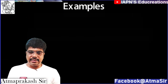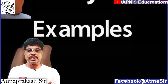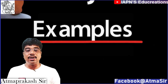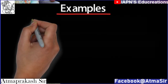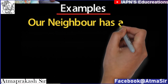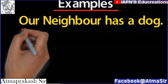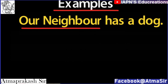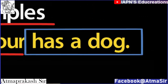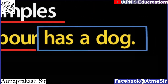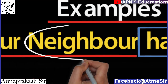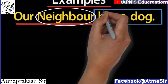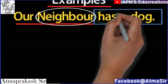Now let us take two example sentences and find out their subjects and predicates for practice. The first sentence is: 'Our neighbor has a dog.' Here, 'our neighbor' is the subject and 'has a dog' is the predicate. In the subject, 'neighbor' is the head noun, and in the predicate part, 'has' is the verb.